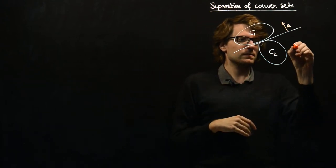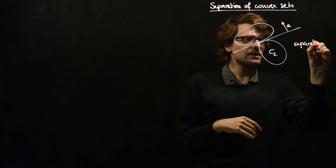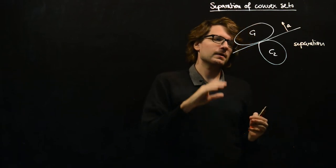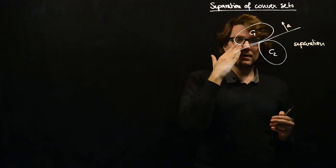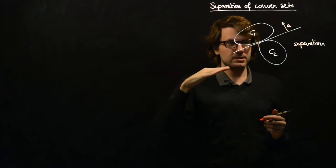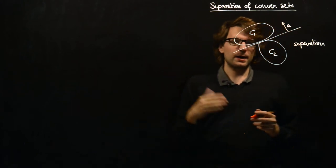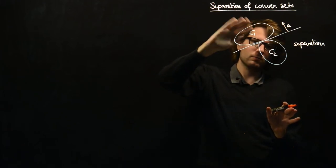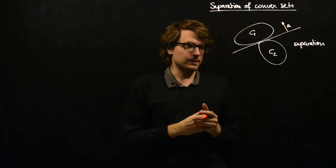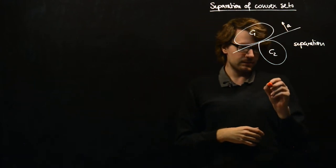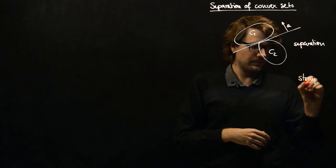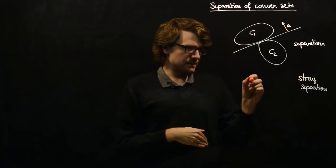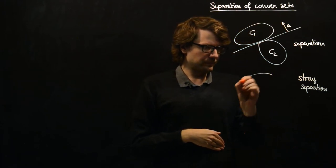So this is a separation. In general, this will be n-dimensional, and then the hyperplane will have co-dimension one or dimension n minus one. And it will also have two sides on one of which the first convex set will be and the second convex set will be on the other side.